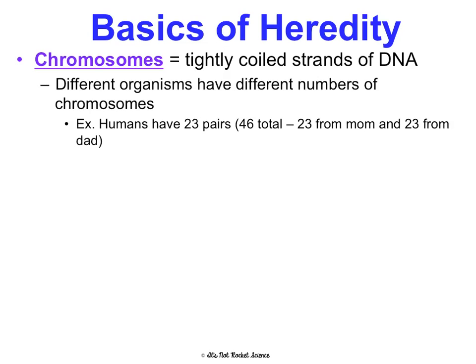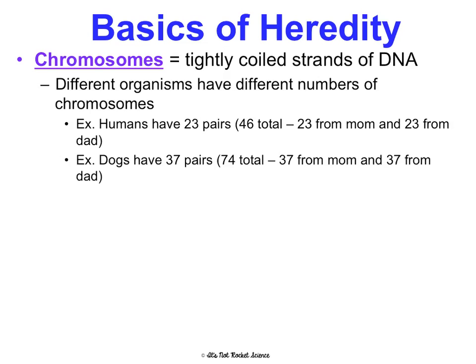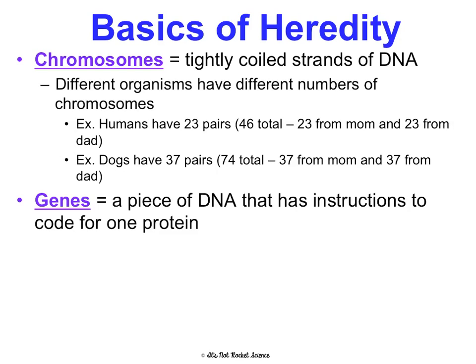Dogs, for instance, have 37 pairs — 74 total. So there are different numbers of chromosomes depending on the organism, but the only number you need to remember are the human numbers.